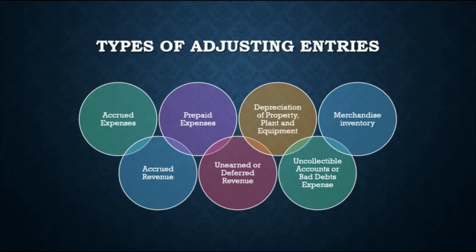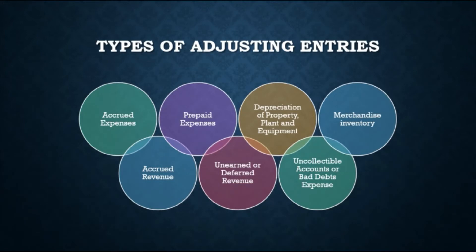The first two — accrued expenses and accrued revenue — are called accruals: expenses already incurred but not yet paid, and revenue already earned but not yet collected. Prepaid expenses and unearned revenue are called deferrals: expenses paid in advance before being consumed, and cash received before services are performed. We will discuss adjusting entries one by one up to bad debts expense; adjustments for merchandise inventory will be covered in the accounting for merchandising business topic.